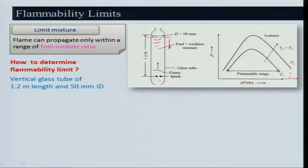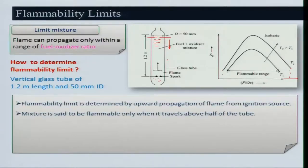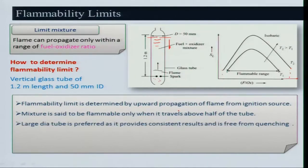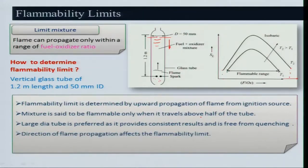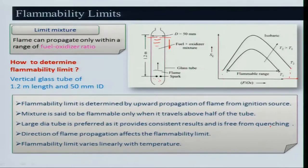People always prefer downward propagation of the flame for measuring flammability limits. Flammability limits determined by upward and downward propagation will be different. The mixture is said to be flammable only when the flame travels above half the tube length with the larger 50 mm diameter for consistent results free from quenching effects. Flammability limits vary linearly with temperature.